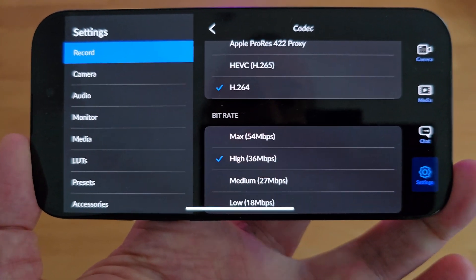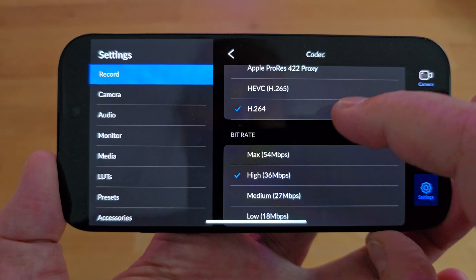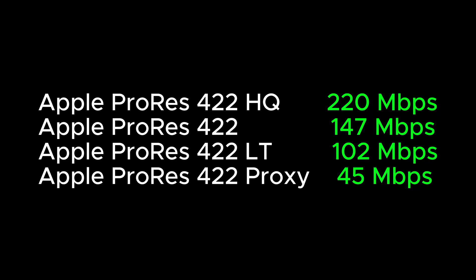How do these bitrates compare to Apple ProRes bitrates? For 1080p 30fps: Apple ProRes 422 HQ is approximately 220 megabits per second, ProRes 422 is approximately 147 megabits per second, ProRes 422 LTE is approximately 102 megabits per second, and ProRes 422 Proxy is approximately 45 megabits per second.